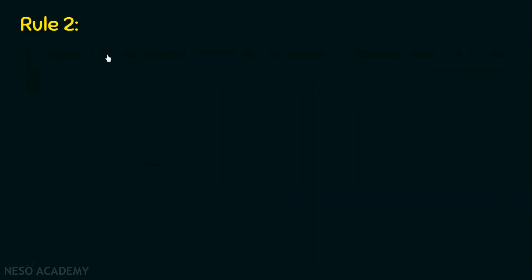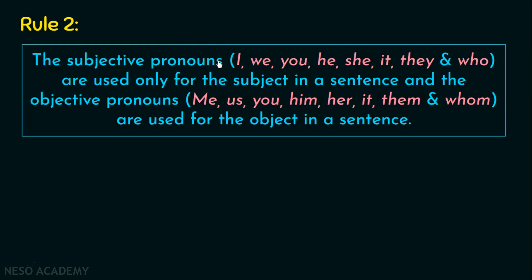We can now move to the next rule: the subjective pronouns — I, we, you, he, she, it, they, and who — are used only for the subject in a sentence. Since we are now clear on what the subject is, we can decide which pronouns to use for it. The objective pronouns — me, us, you, him, her, it, them, and whom — are used for the object in a sentence. So just as there are specific pronouns for the subject, there are specific pronouns for the object as well.